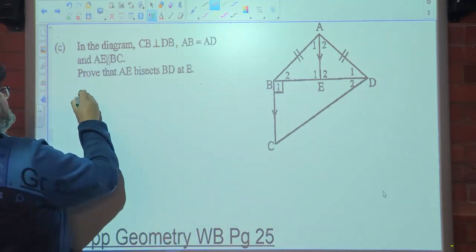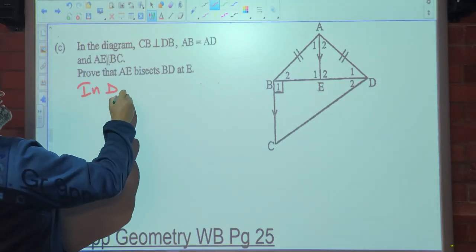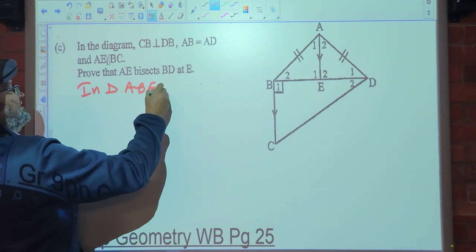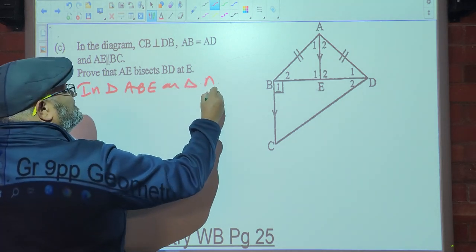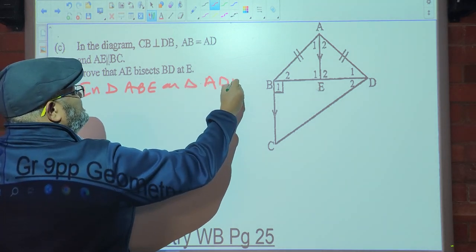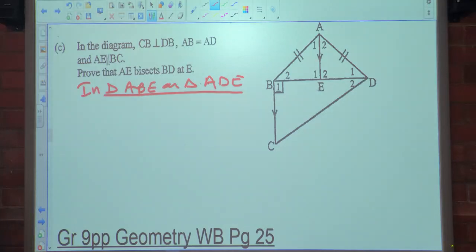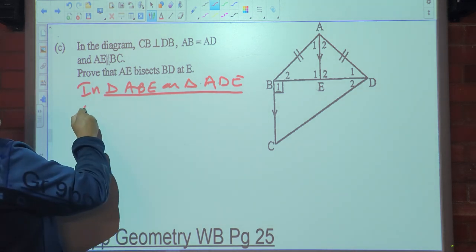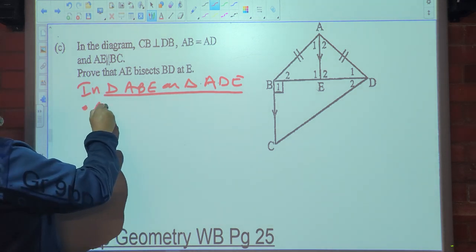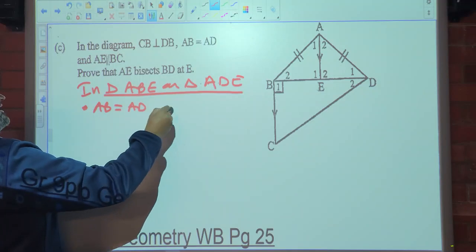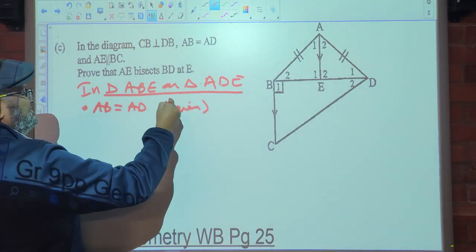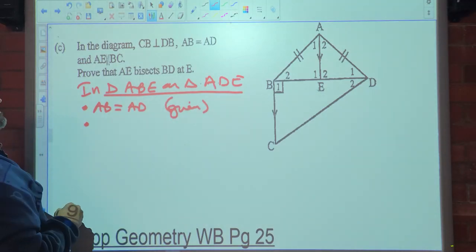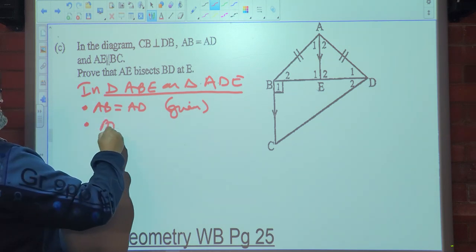So let's go — in triangle ABE and triangle AD, we start. Get it in the right order from the beginning. What can we say? AB is equal to AD — why? Given. AE is common.